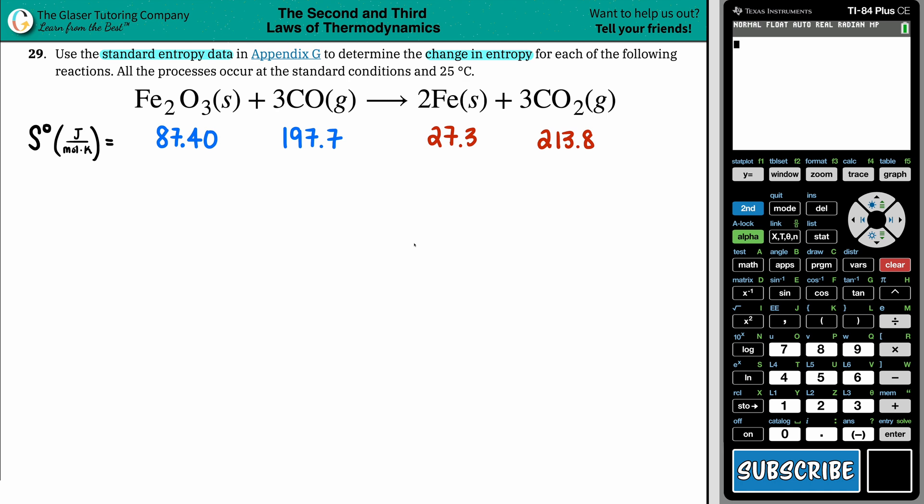Cool. So here we go with our balanced equation here. We've got Fe2O3 solid plus 3 CO gases plus 2 Fe solid plus 3 CO2 gas.